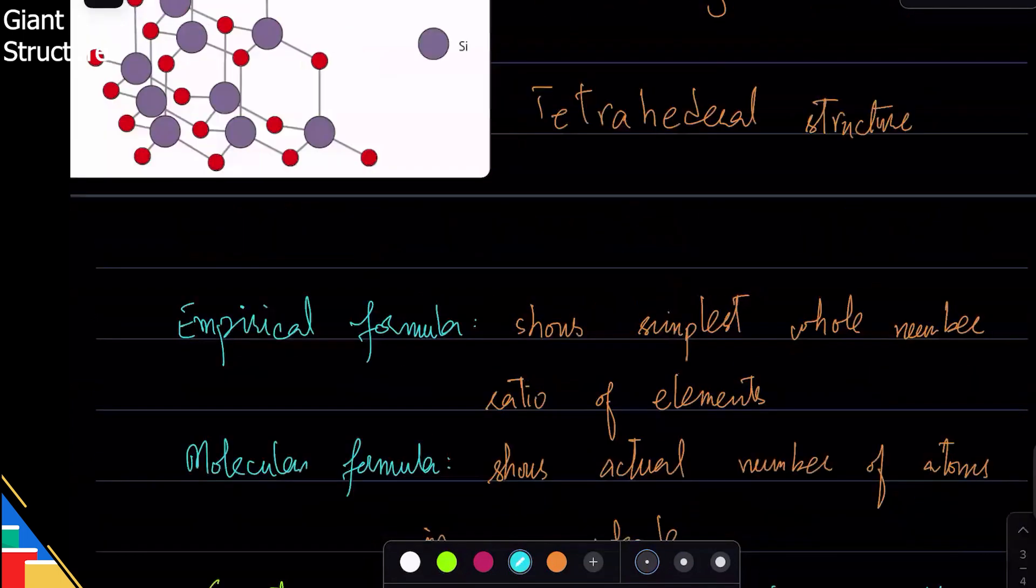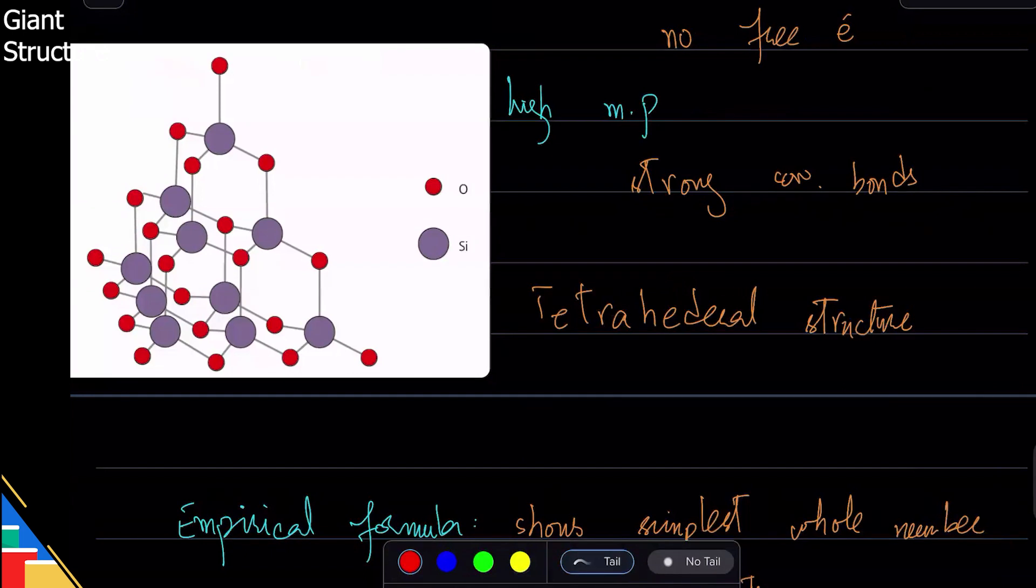So for example, if you want to make this formula: silicon and oxygen. Silicon is attached to four oxygen, and oxygen is attached to two silicon. So the ratio is one to two.